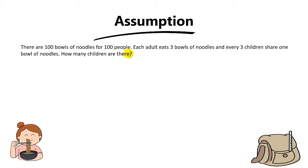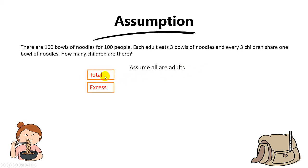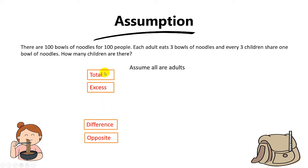Instead of using guess and check, the faster way is to use assumption. Since the question asks for the total children, let's assume the opposite — assume all 100 are adults. The short form for assumption is TIDAL: Total, Excess, Difference, and Opposite. I've included a comprehensive guide in the video below explaining what these four terms mean.